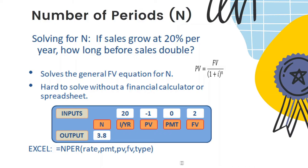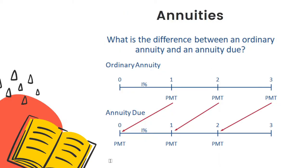The next example is calculating n. If you invest 1 million dollars today at a growth rate of 20 percent per year, the question asks how long it would take for 1 million dollars to double to 2 million dollars. When you solve for n, you get n equal to 3.8 years.